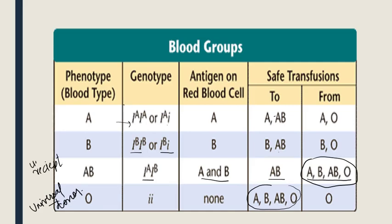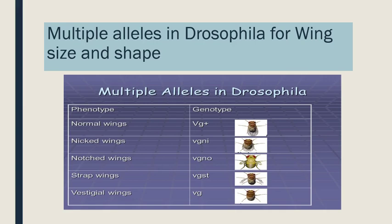For one character — blood group — there are different types of genotypes available in a population. This is multiple allelism. One more example of multiple allelism is in Drosophila. Morgan carried out his experiments on the fruit fly. In Drosophila, multiple alleles are seen for the shape of wings. If the genotype is VG+, the fly has normal wings. If the genotype is VGNI, they have nicked wings. If they have VGNO, the wings are notched. If the genotype is VGST, the wings are strapped. And if they have VG, the phenotype is vestigial wings. So here also, many alleles are responsible for one character — the shape of the wing.